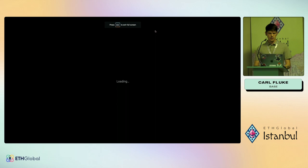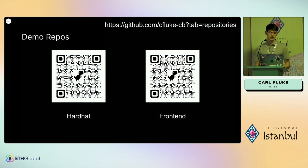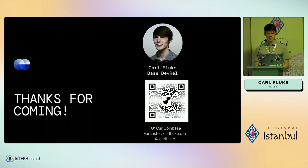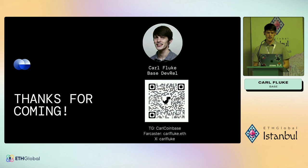Those are the two code repos — feel free to use them as reference. They use the Alchemy account abstraction SDK. We support other layers too: Safe smart contract wallet, Biconomy, Stack Up, Zero Dev, and others in the Base ecosystem. These are just some examples. Thanks for your time — happy to take questions.